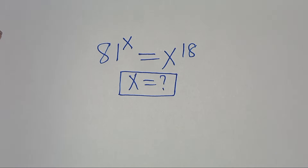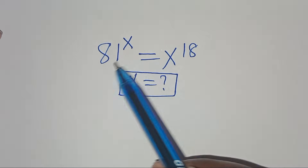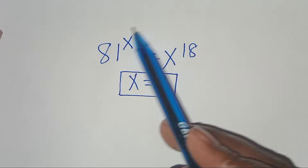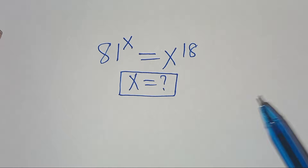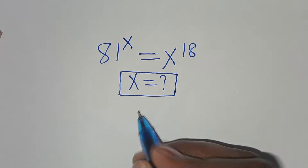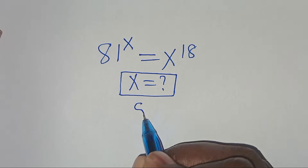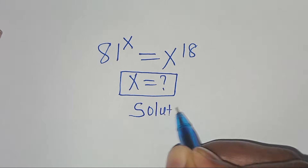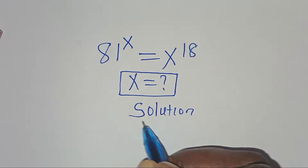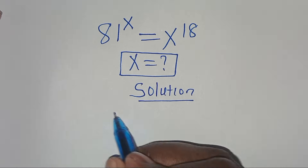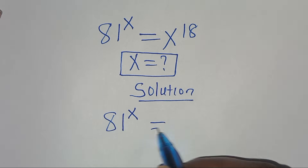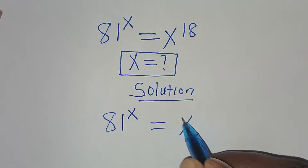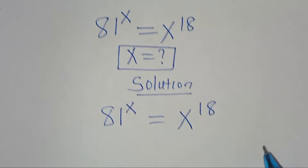Hello everyone, you are welcome to solve this nice exponential equation here, which is 81 to the power of x. This is equal to x to the power of 18. So what is the value of x? Now let's provide a solution. We have 81 raised to the power of x, this is equal to x to the power of 18.